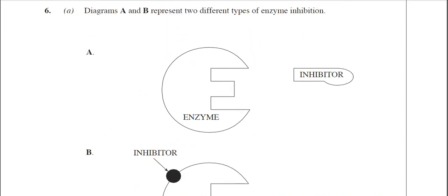If we go up to A, you can see that the inhibitor has a similar shape to the active site. It's not complementary to the active site, but it is similar because it could actually fit into that region of the active site. So this type of inhibition is competitive inhibition, and the inhibitor is a competitive inhibitor.